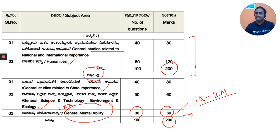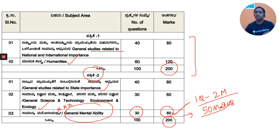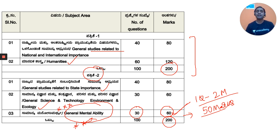It's very easy to score 50 marks out of 60 in mental ability. You will be easily able to solve at least 25 questions. Most students think general mental ability is very difficult and don't prepare for it, which is why they score less. Here you have to be prepared, and I will help you achieve a minimum of 50 marks.